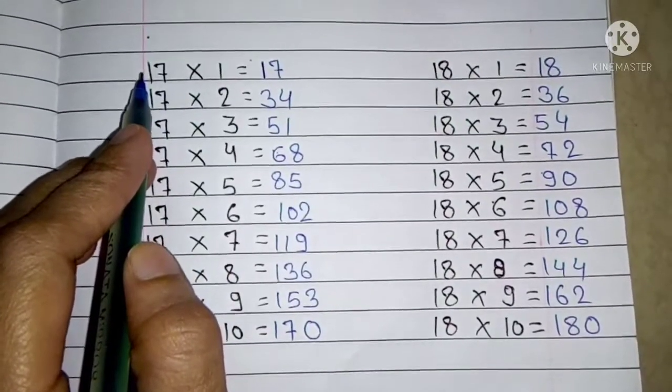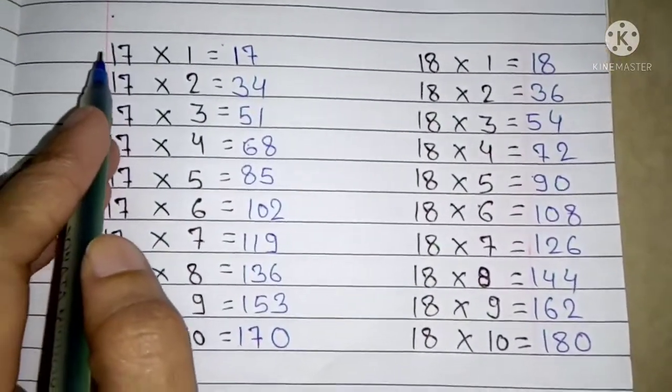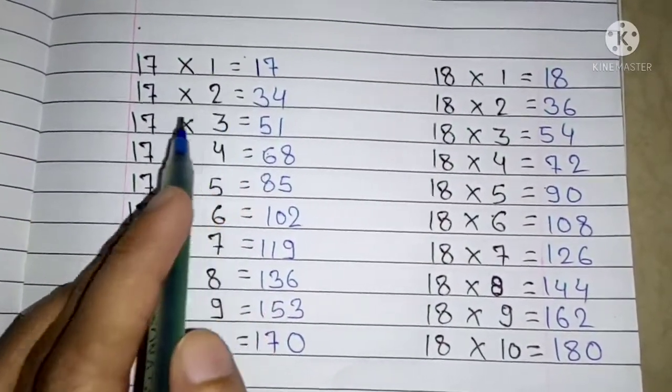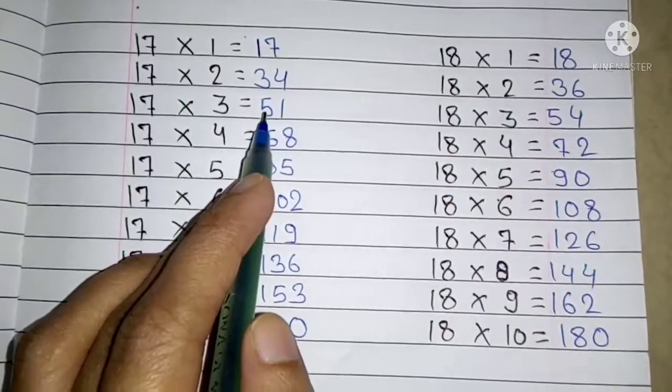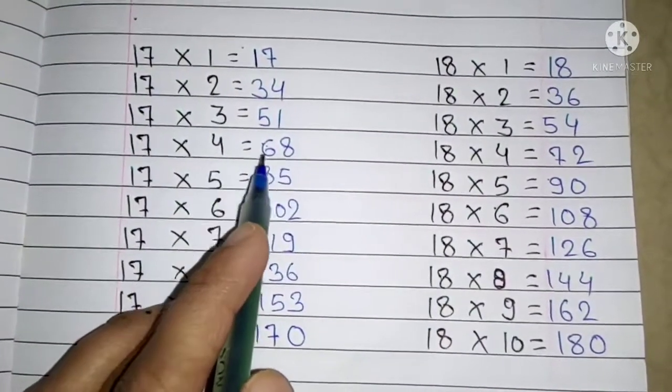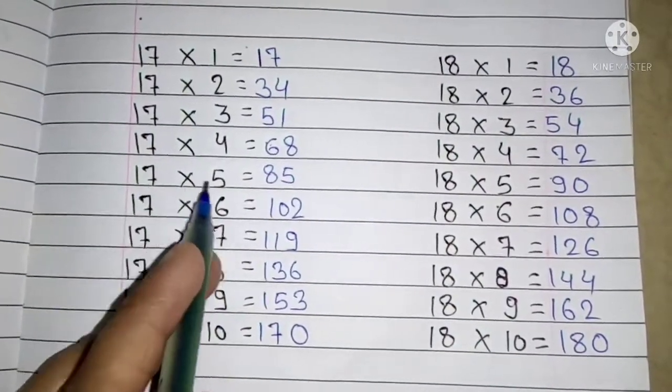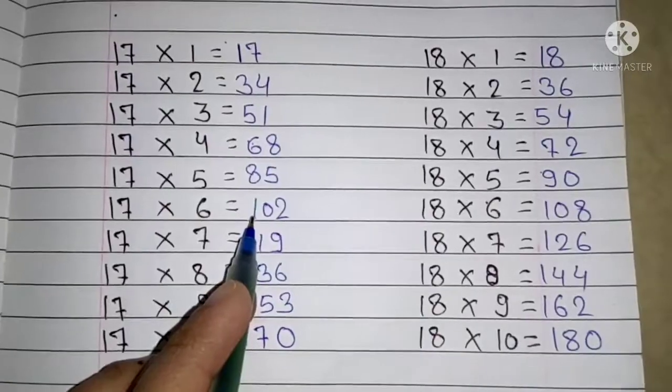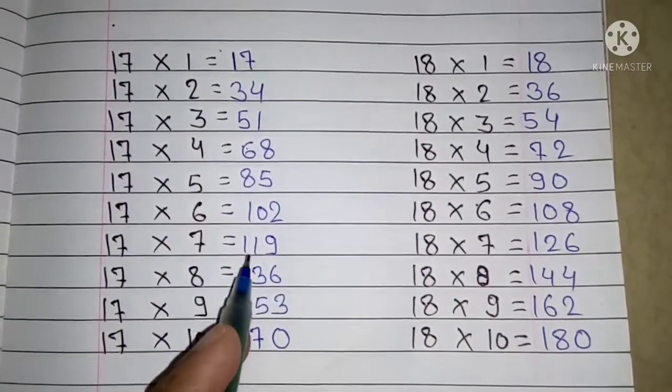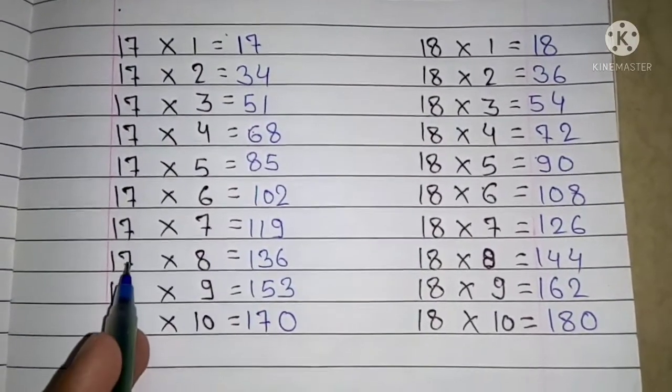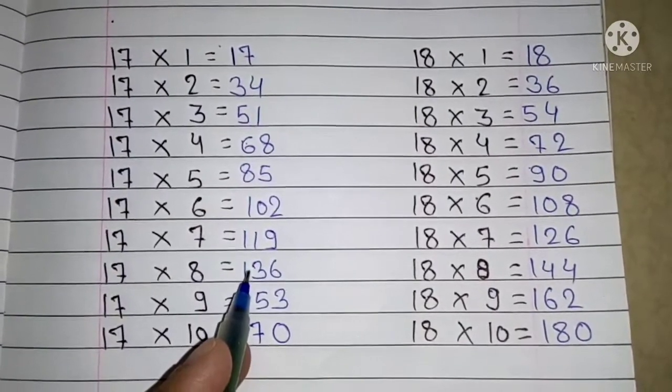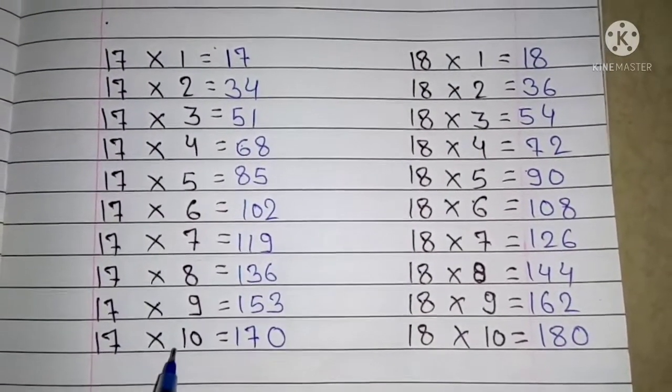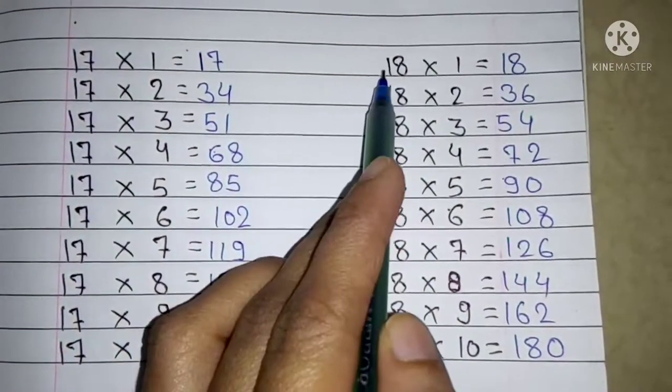Next table 17: 17 ones are 17, 17 twos are 34, 17 threes are 51, 17 fours are 68, 17 fives are 85, 17 sixes are 102, 17 sevens are 119, 17 eights are 136, 17 nines are 153, 17 tens are 170.